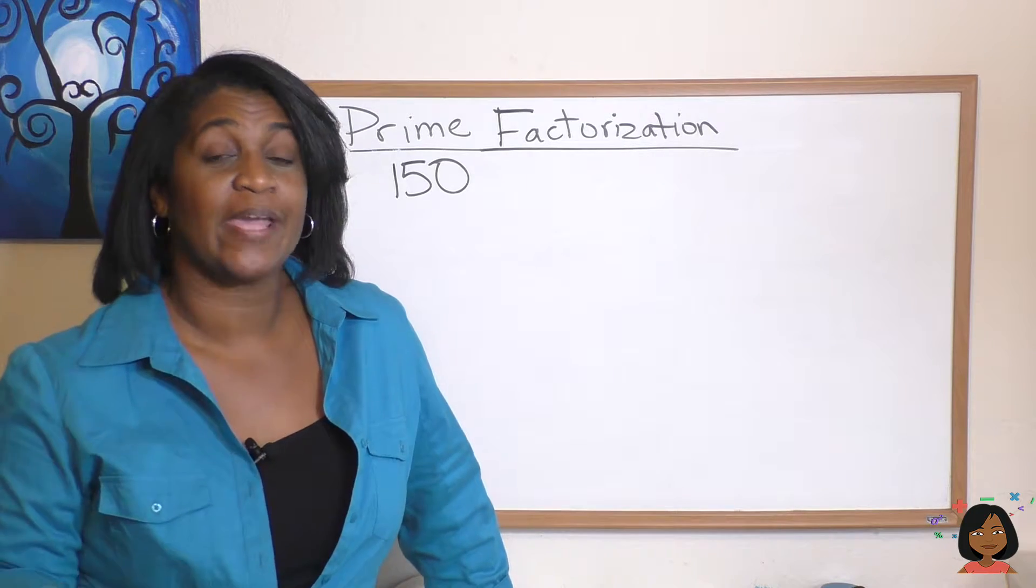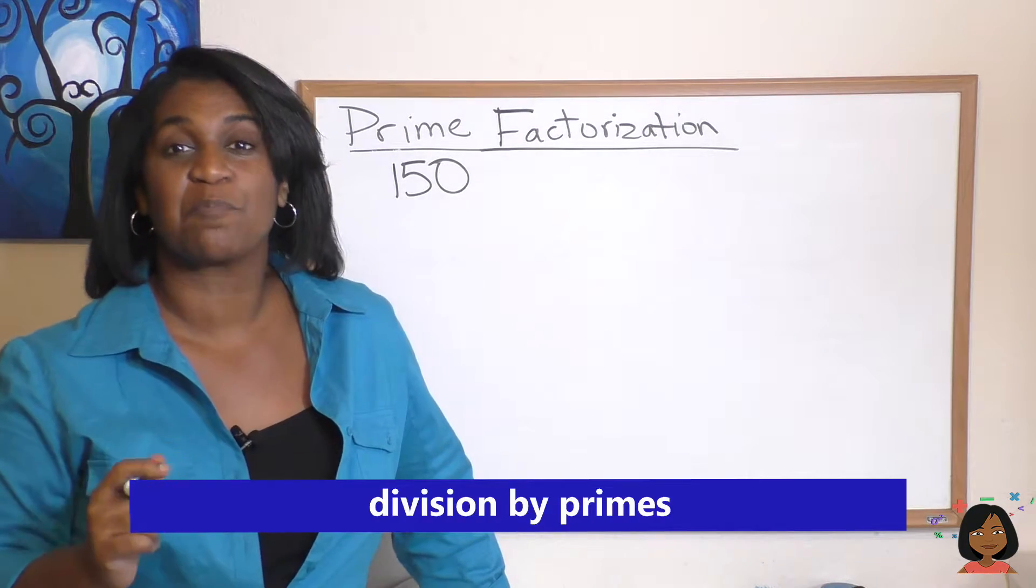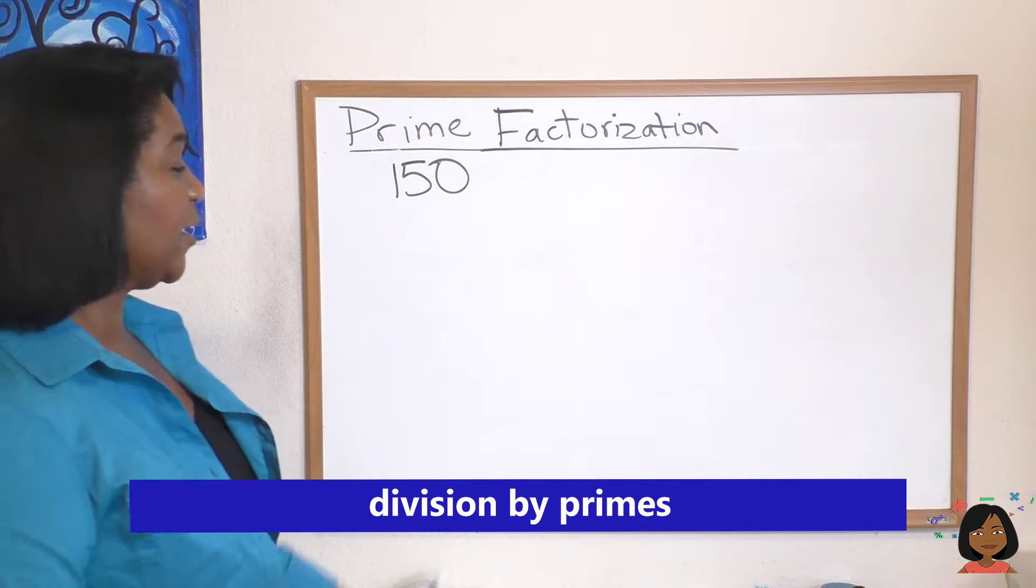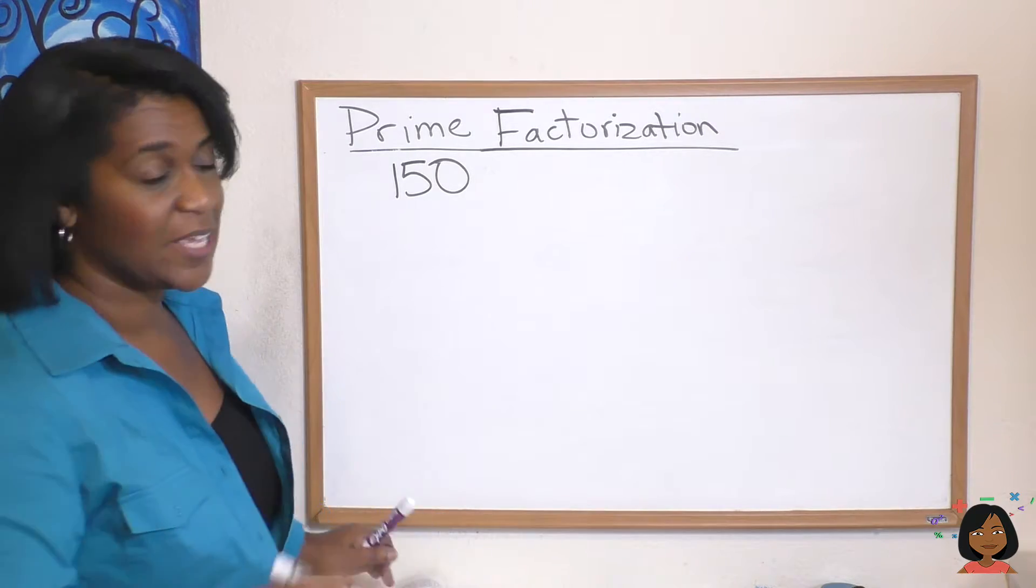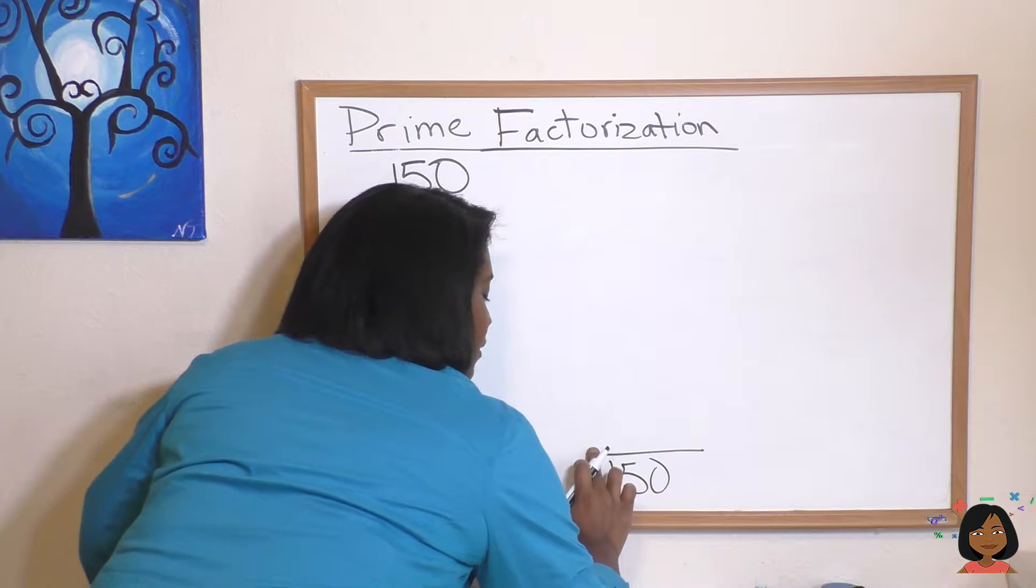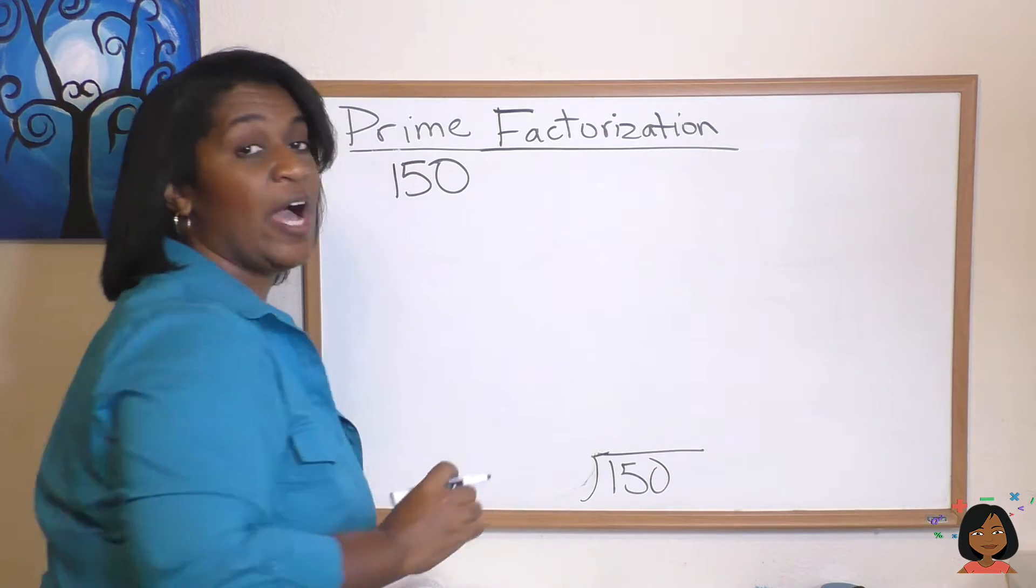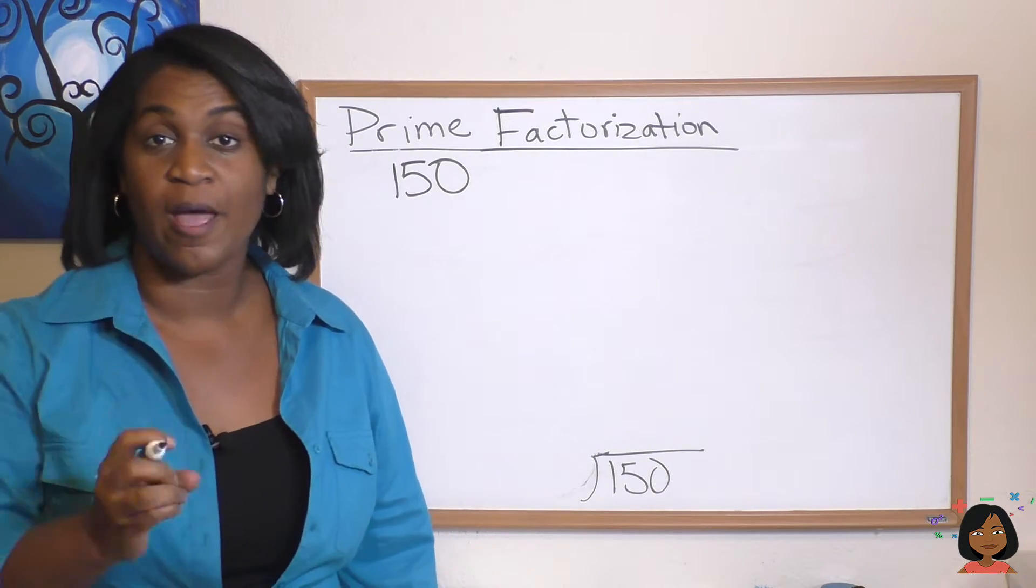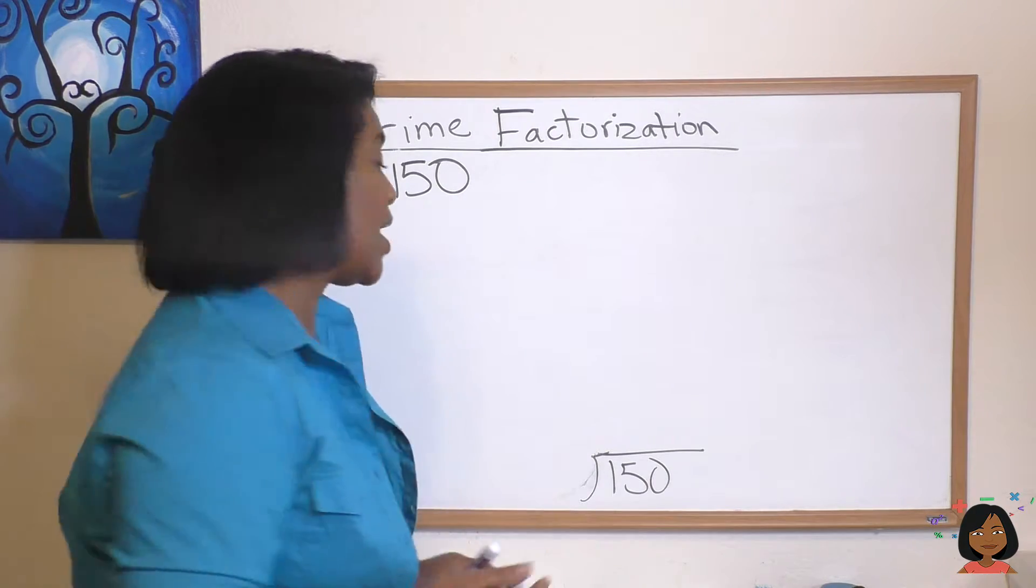The factor tree is one way to do factoring. There is another way called division by prime. So let me show you that way. We're going to use the number 150. I'm going to do something a little strange. I'm going to start writing at the bottom of my board. I'm going to put 150 under my division bar. And I'm going to start with the first prime number. I'm going to say, does 2 go into 150? And it does.